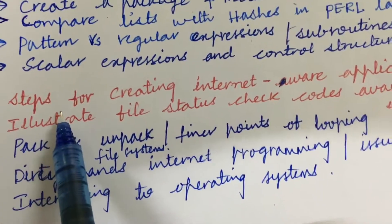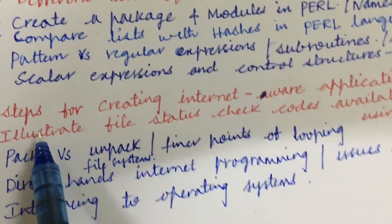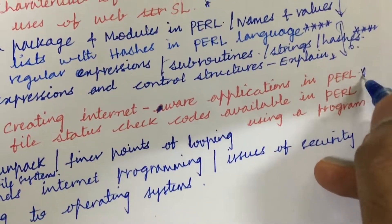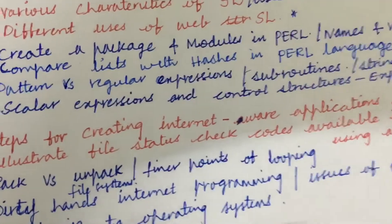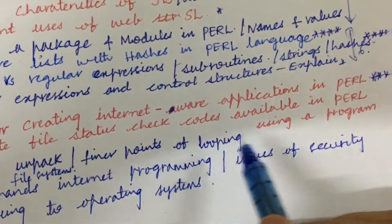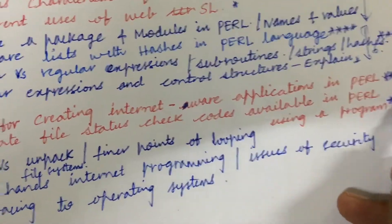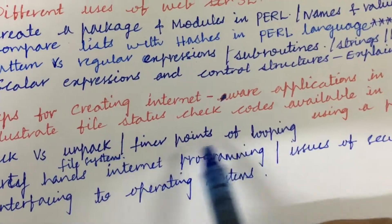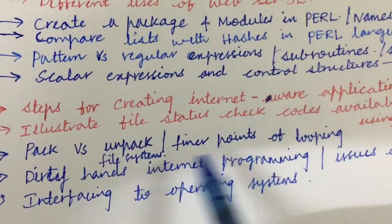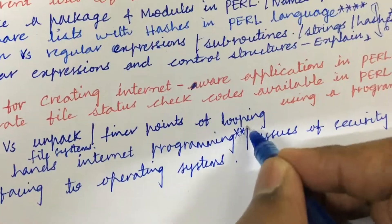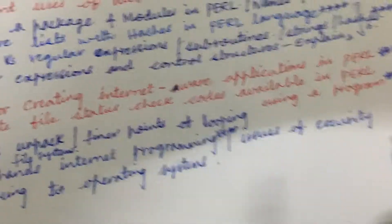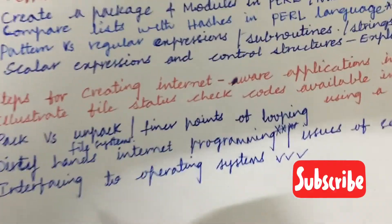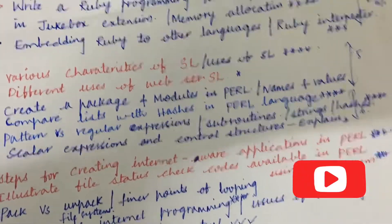Only one question will be covering from the fourth unit. As per the COVID exam pattern, 8 questions will be given of which you are supposed to answer any 5. Steps for creating internet-aware applications in Perl is also a very important gunshot question. Illustrate file status check codes available in Perl using a program — also a very important question. Later, pack versus unpack, file system differences, finer points of looping, and dirty hands internet programming are also important. Issues of security and interfacing to the operating system may be a 5-mark question.